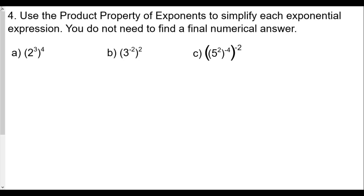Just use the product property of exponents to simplify each exponential expression — you do not need to find a final numerical answer. The product property of exponents is a lot like what I call the power rule: when we have a number raised to a power and raise that whole thing to another power, we keep the base the same and multiply the exponents. Since we have two to the third raised to the fourth, we keep the base two and multiply three times four, giving us two to the twelfth power.